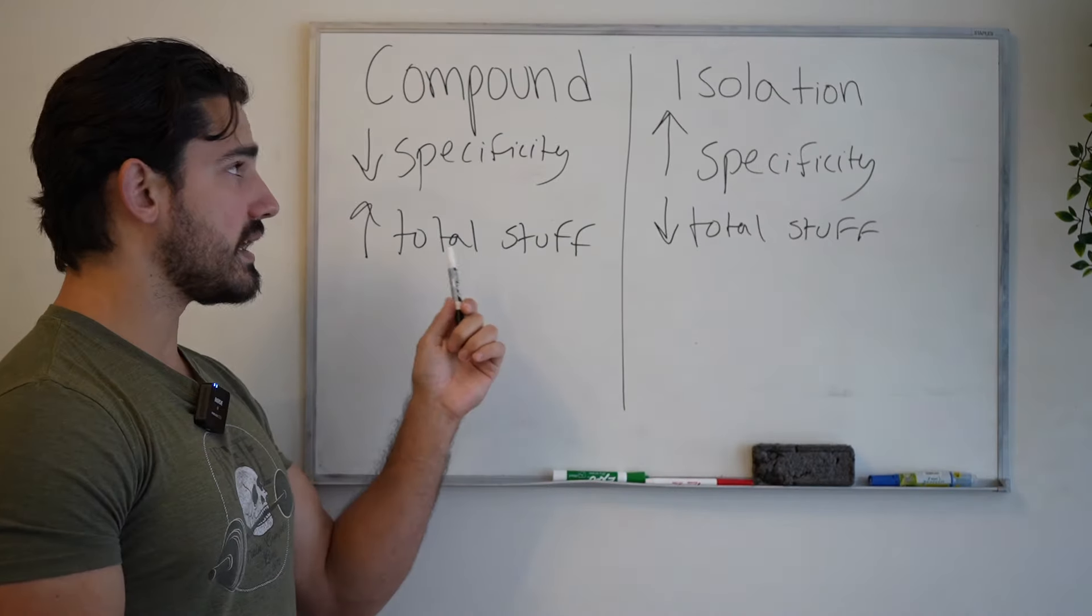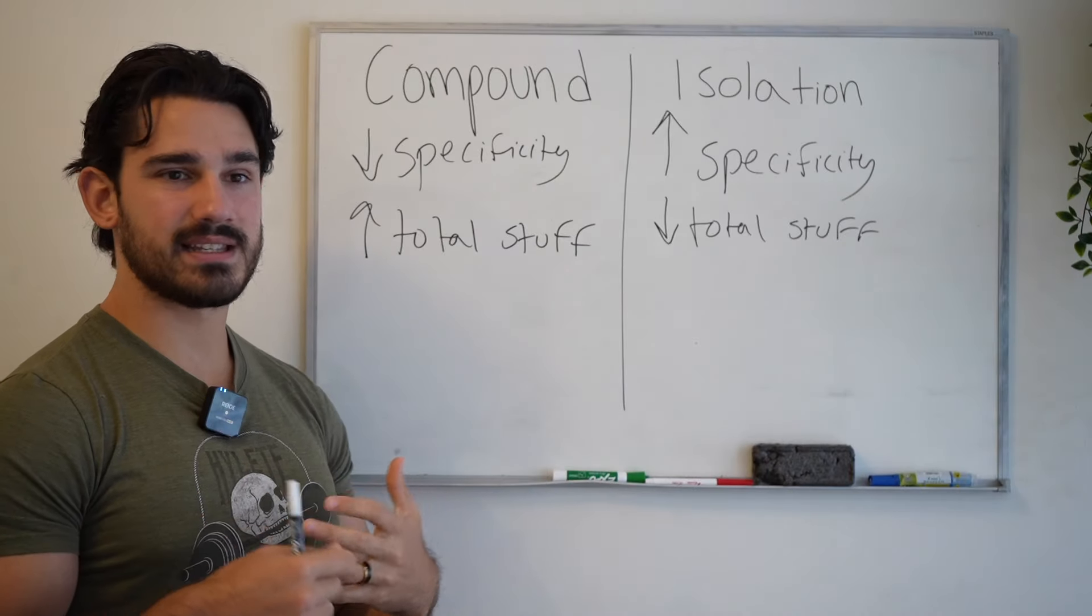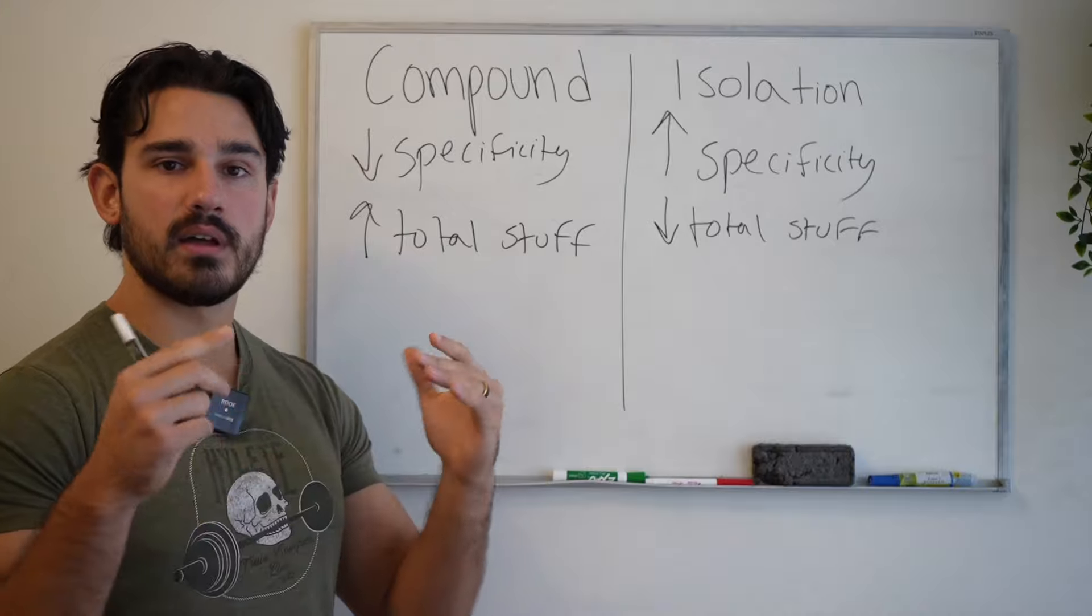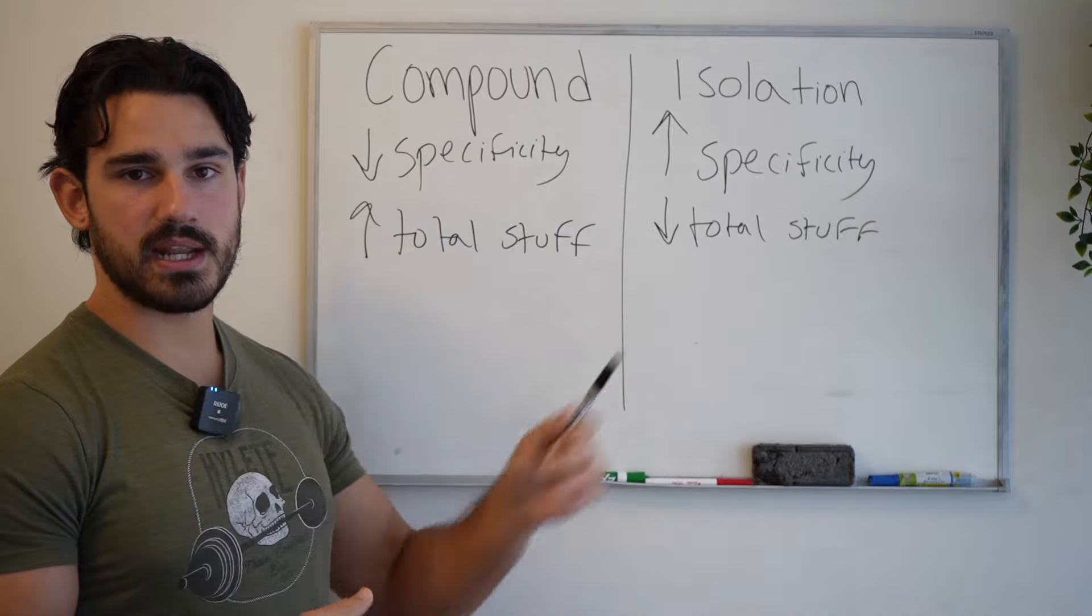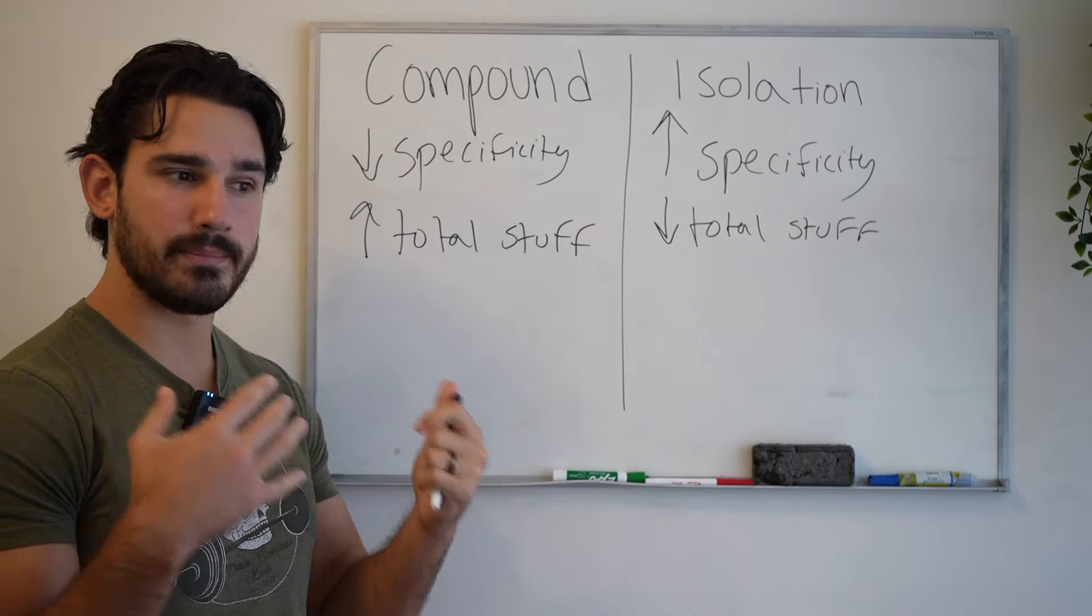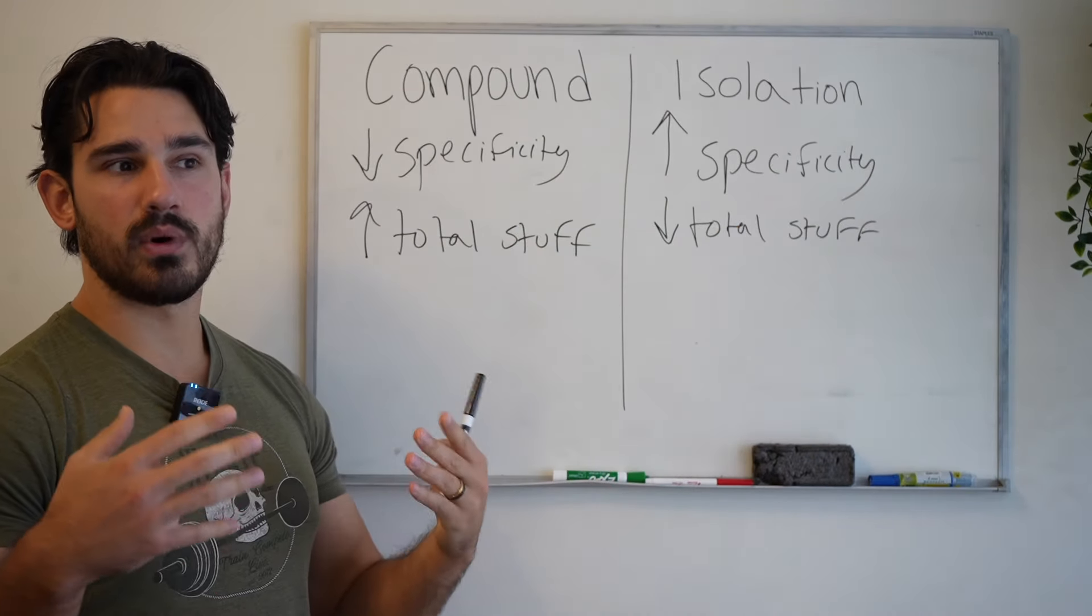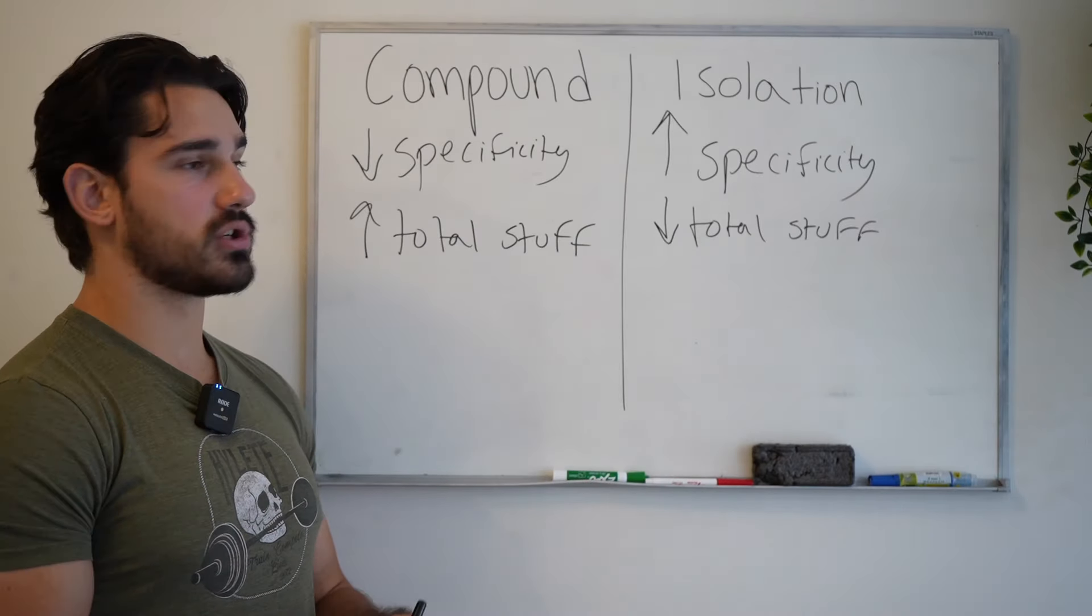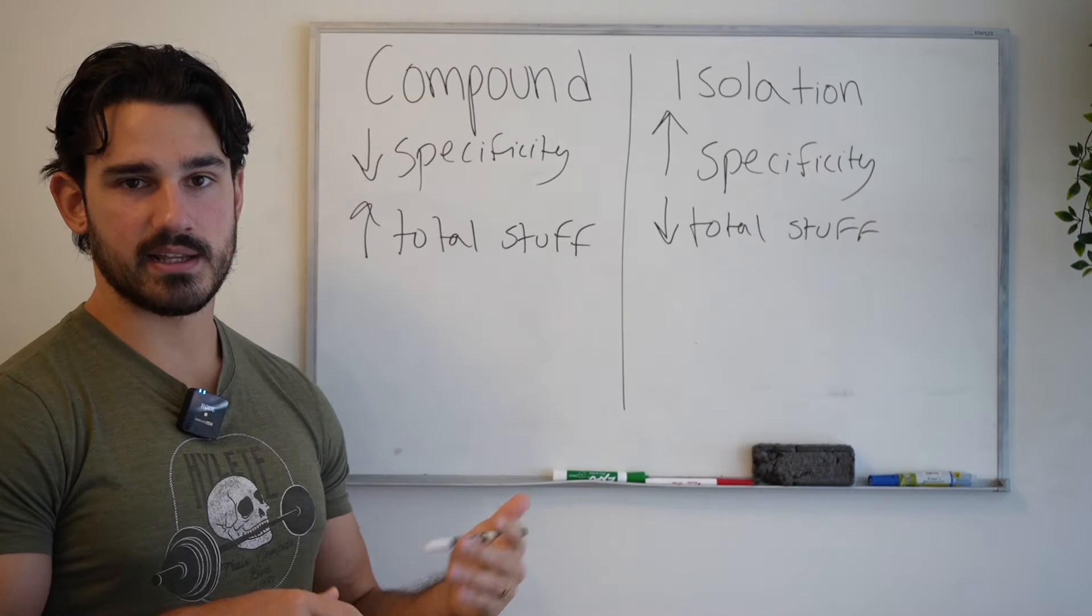And this is oftentimes why beginners do really well with just a lot of compound-based things. Exercises which in essence don't have a single rate limiter, but perhaps two or three or even four, because again, the amount of stimulus that they need is very, very low.